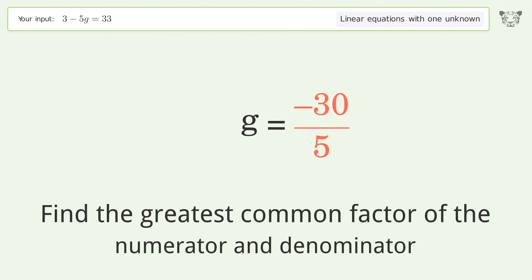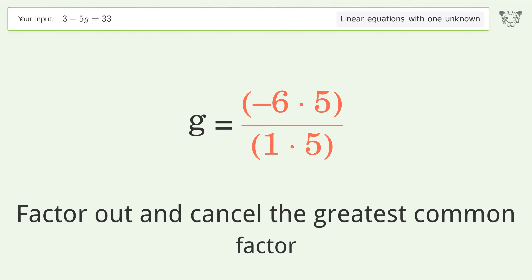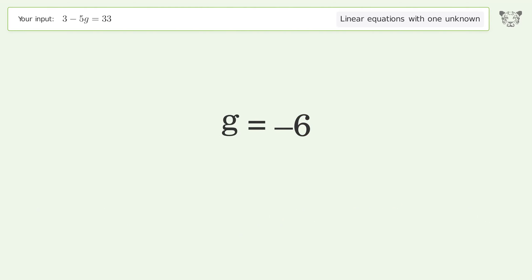Find the greatest common factor of the numerator and denominator. Factor out and cancel the greatest common factor. And so the final result is g equals negative 6.